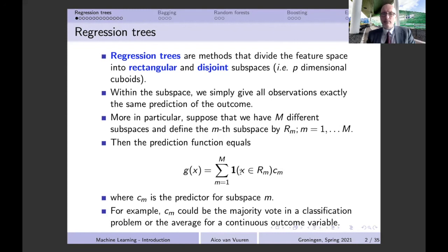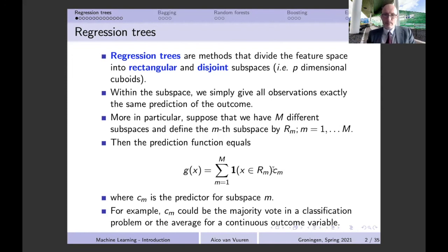Since these subspaces cover the whole feature space, there is exactly one subspace for which x is an element. So at most one indicator will be active at a time. The question still arises: how are we going to determine c_m? In applications, we try to do this as simply as possible, giving c_m a simple prediction rule.